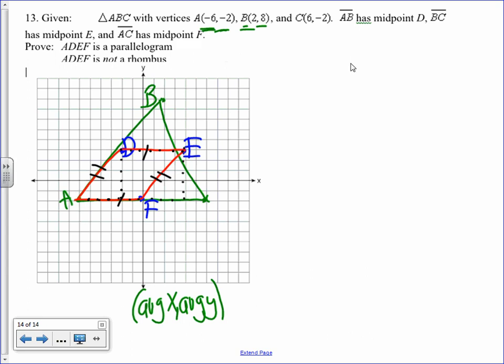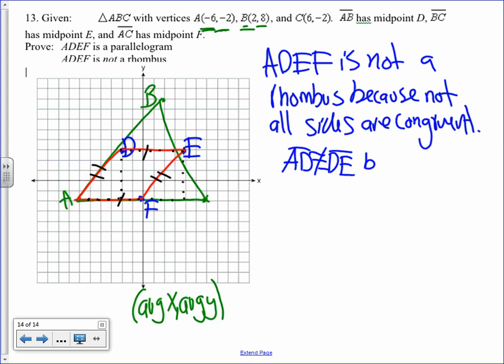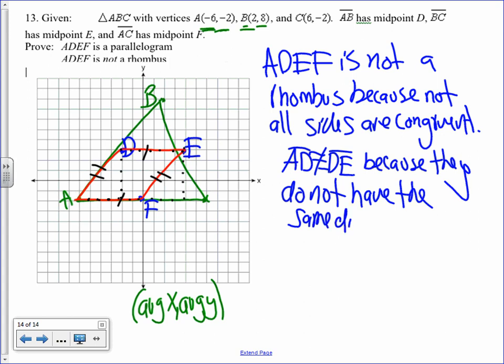Now we say that ADEF is not a rhombus because not all sides are congruent. And we again have to be specific. Pick a pair of sides that aren't congruent. Let's say AD and DE are not congruent because they do not have the same distance.